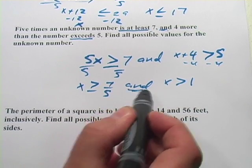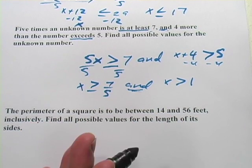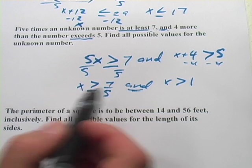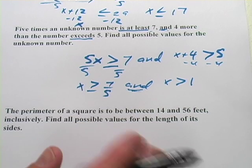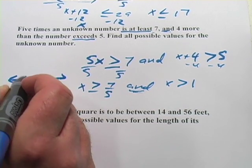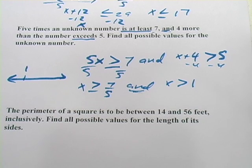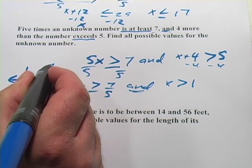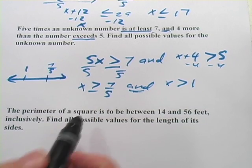Now, because it says and, the solution we give, the answer we give, needs to satisfy both of these. It needs to be where they're both true. So to think about that, I like to draw a little number line. So I'll do that over here. I'm going to put one right there. And seven-fifths is a little bit more than one. It's one and two-fifths. So we'll put that right there.